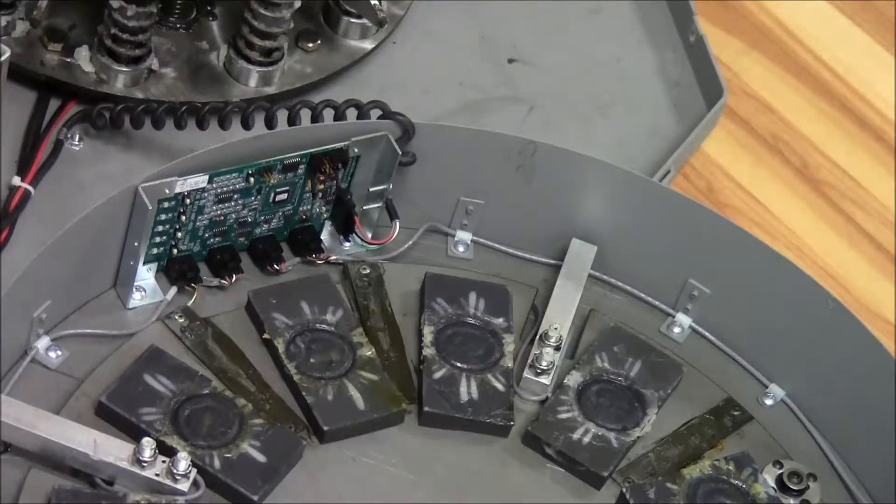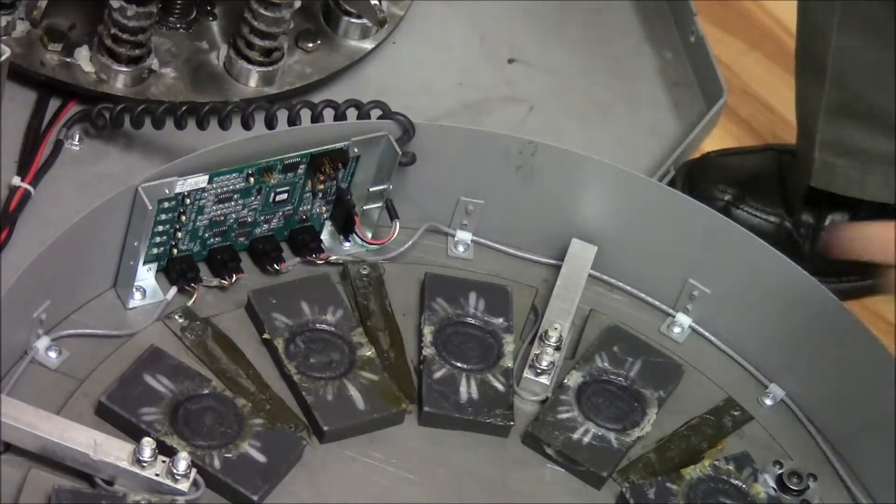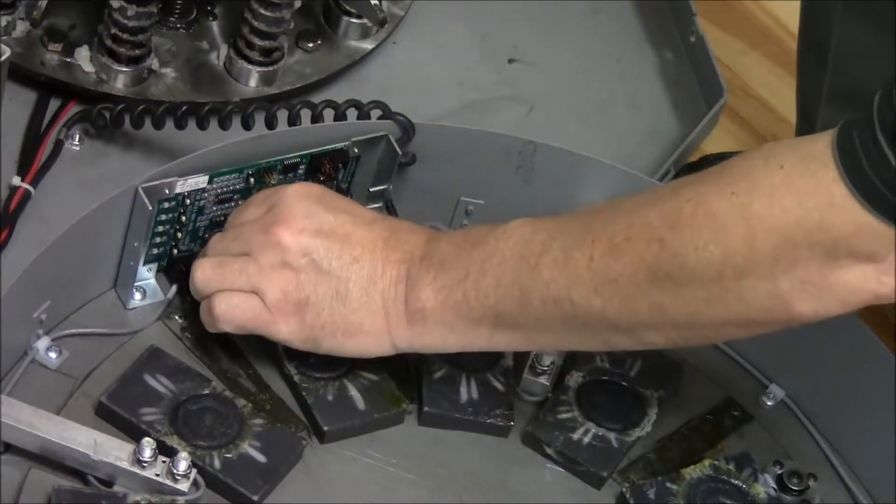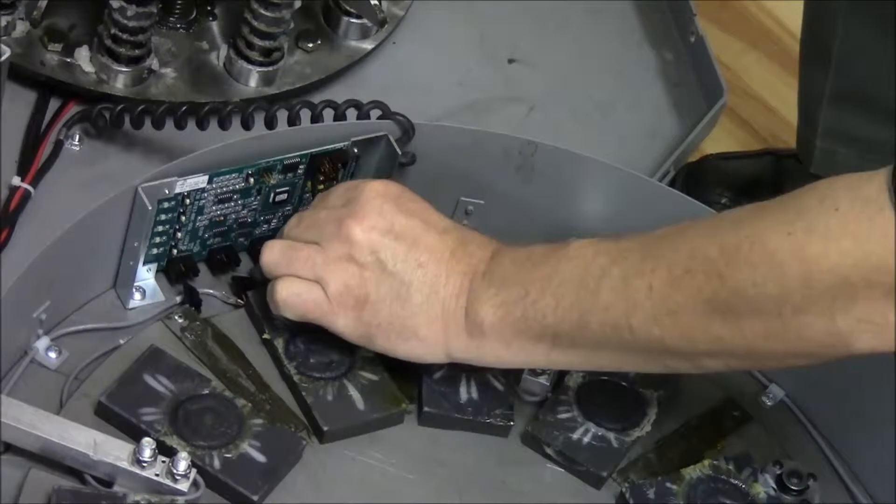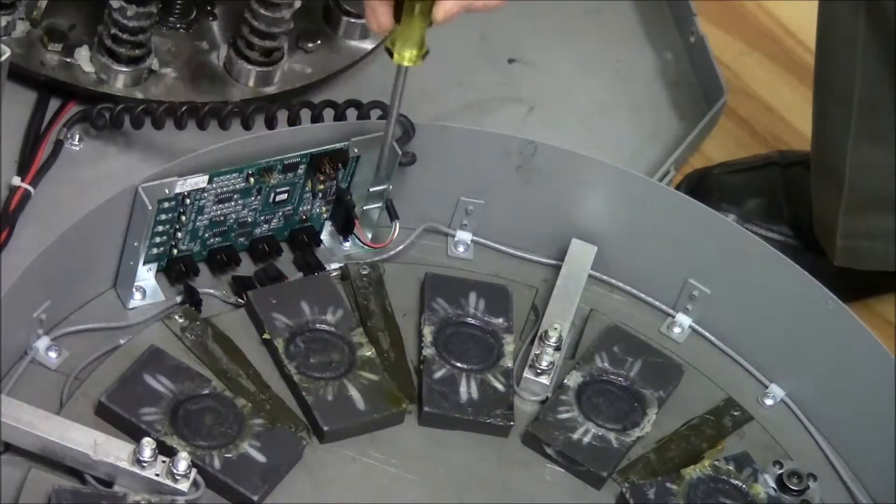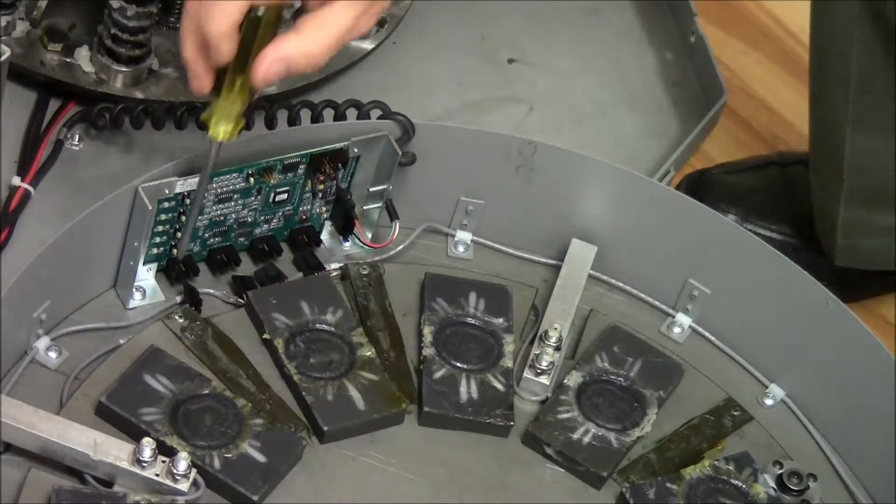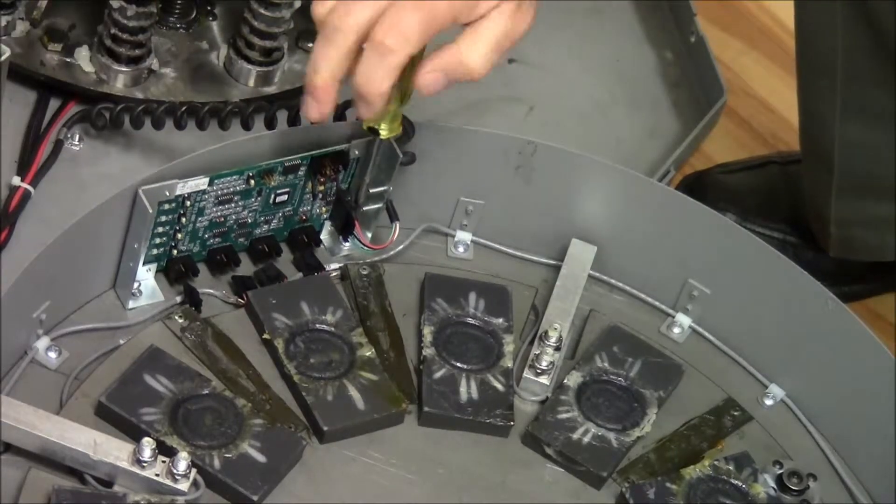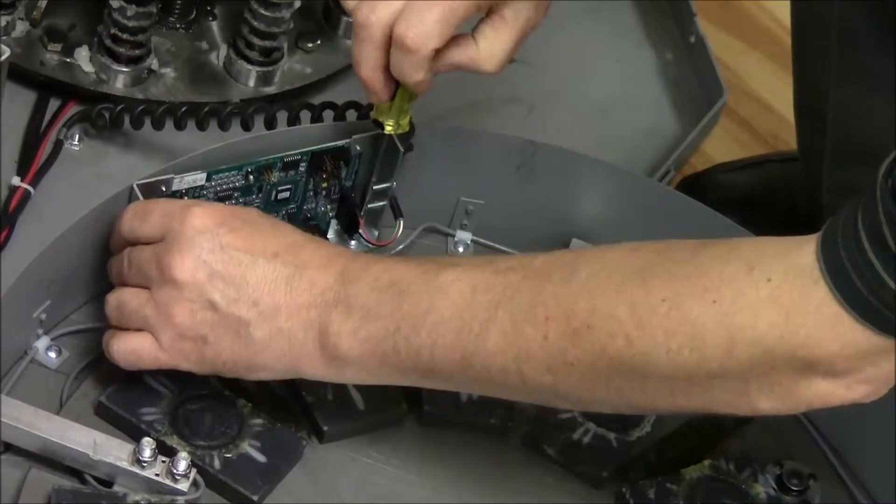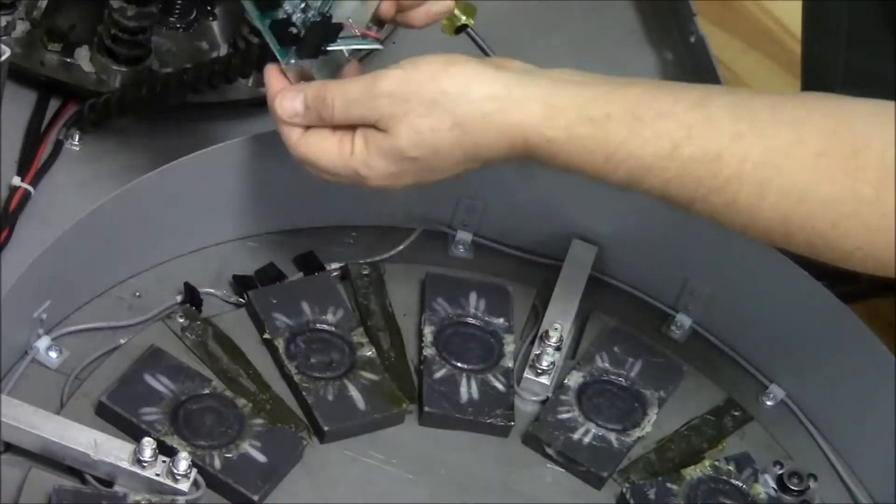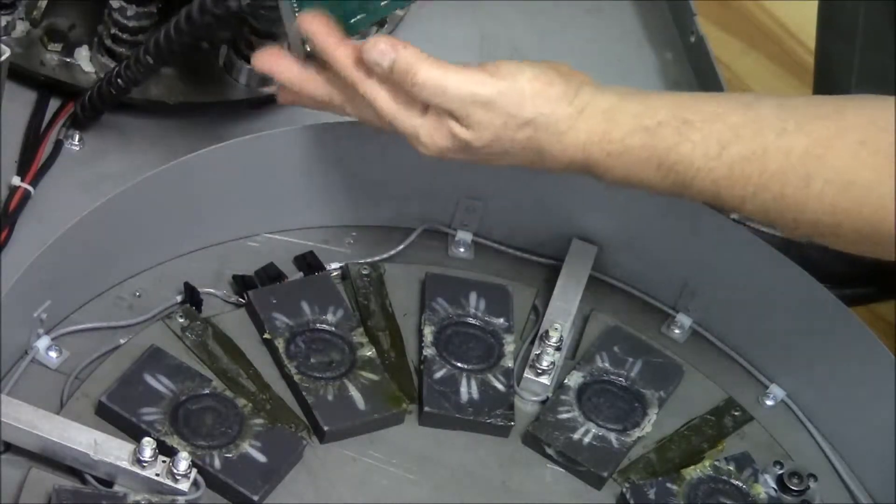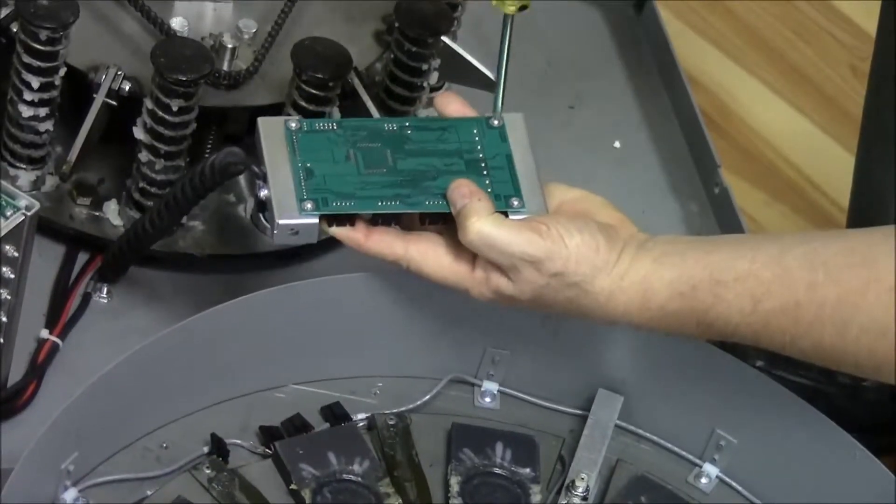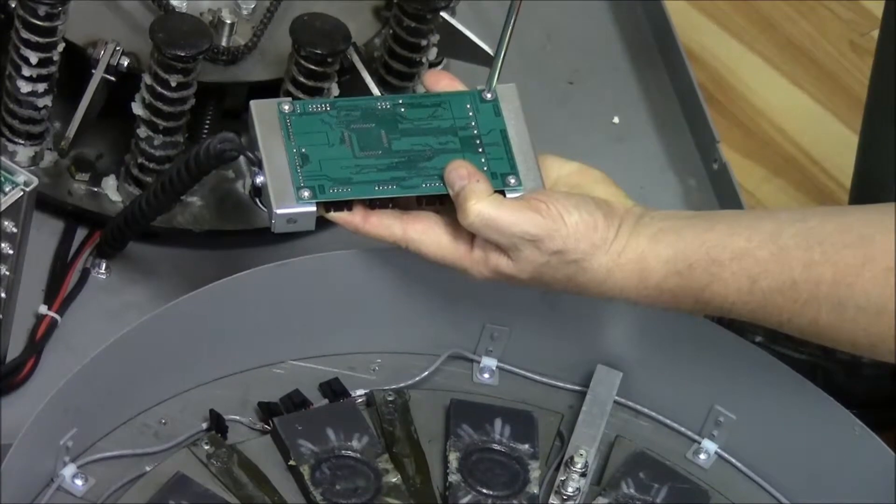Next we're going to remove the strain gauge board. There's four connectors for the strain gauges. We're going to disconnect each one of those connectors. There's two screws that mount the strain gauge board to the platform. I'm going to unscrew those and remove those. The strain gauge board can be dismounted with the four screws on the back of it. Remove those and install the new strain gauge board.